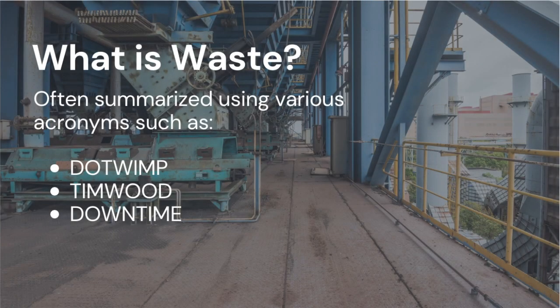To help individuals across the organization understand what waste is, lean practitioners have developed several acronyms to help make recalling the forms of waste simpler. If you were to do research on the common forms of waste, it's likely that you'll come across a handful of these acronyms, which include DOTWIMP, TIMWOOD, and DOWNTIME.